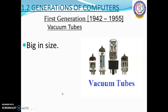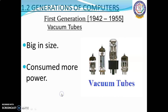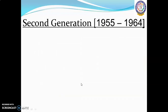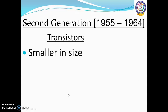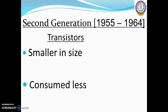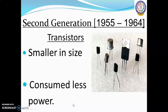Vacuum tubes were big in size and consumed more power. Malfunction due to overheating and machine language was used. The second generation computers were smaller in size when compared to first generation, generated less heat, and consumed less power. Machine language as well as assembly language was used.